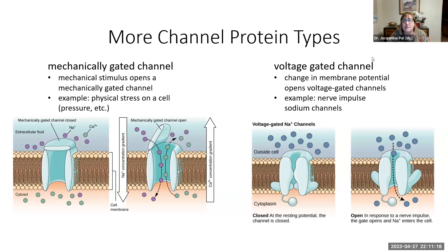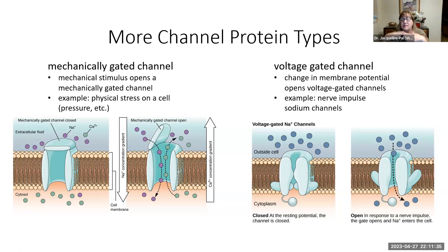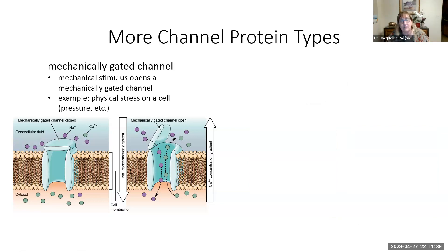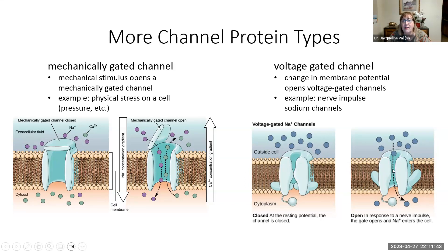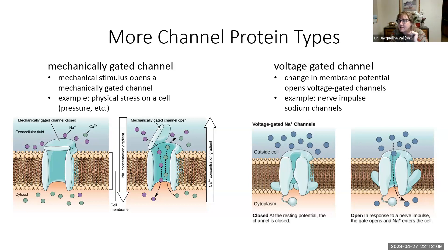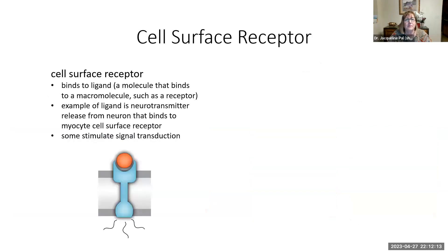The fourth type is a voltage-gated channel, which we discuss frequently in the nervous system and skeletal muscle. The cell is at resting potential — typically around minus 70 millivolts. When a nerve impulse depolarizes the membrane, that loss of negativity causes the channel to open and lets sodium enter the cell. Both the voltage-gated and ligand-gated examples involve sodium entry and relate to neuromuscular junction activity, but they are completely different channel types. This is also how calcium gets into the terminal bouton.